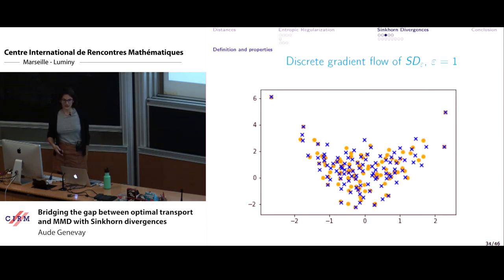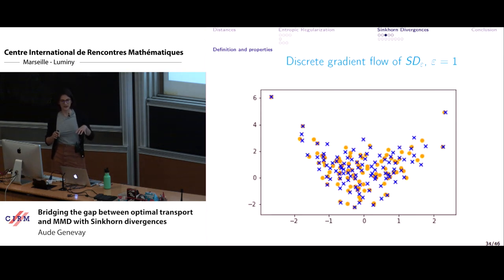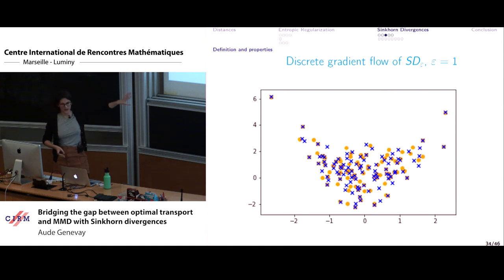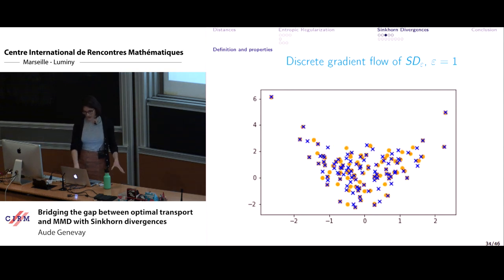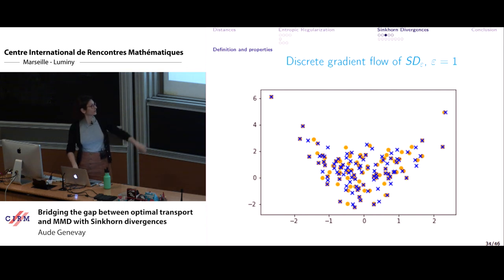Here's what happens when I replace regularized transport with Sinkhorn divergences. The behavior is slightly similar to MMD in that points are not matched directly to their targets as in optimal transport matching. But there are no points lagging behind, and while the matching isn't perfect, it's much better than MMD. Using better gradient methods than simple gradient descent, you can actually recover the positions more accurately.